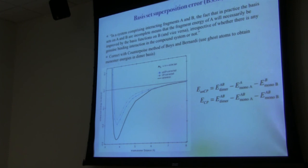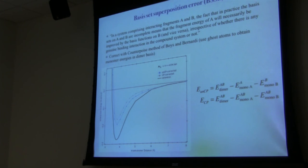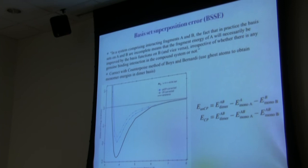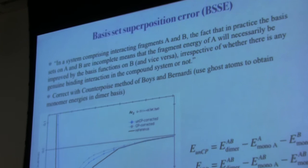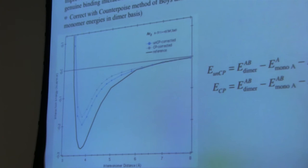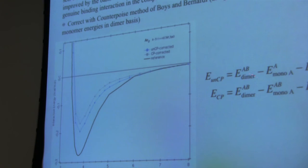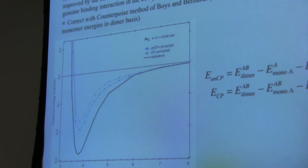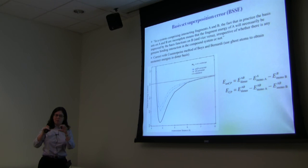A topic relevant to basis sets is basis set superposition error (BSSE). For a dissociation curve like argon dimer, you compute the dimer energy and subtract the energies of the two monomers. However, in the dimer calculation — because the basis set isn't complete — electrons on one monomer borrow some space to expand from the basis functions on the other monomer.